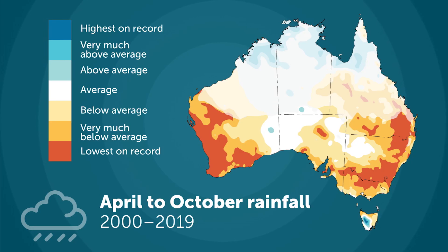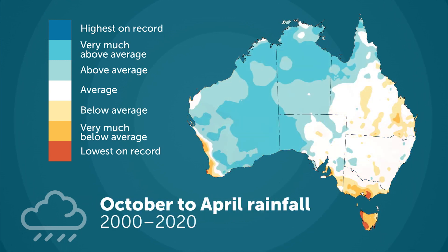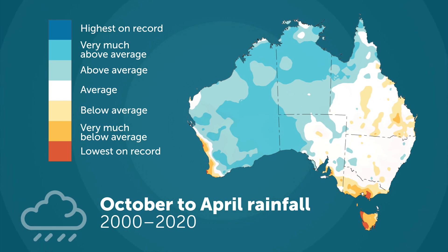There is a clear shift in the seasonality of rainfall in southern Australia. We are seeing significantly reduced rainfall from low pressure systems and from cold fronts during the cooler months of the year. Further north, some of these regions have had more summer rainfall, while in the tropics there is a pattern of increased rainfall during the wet season.